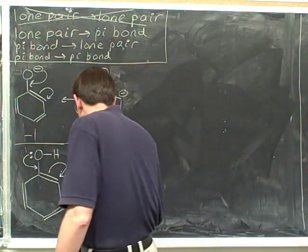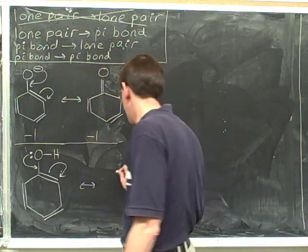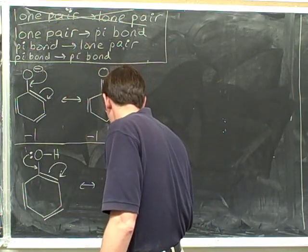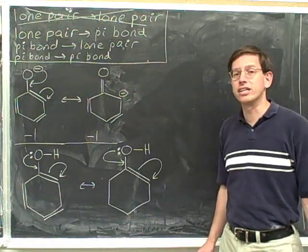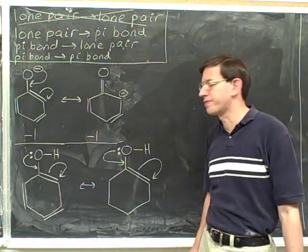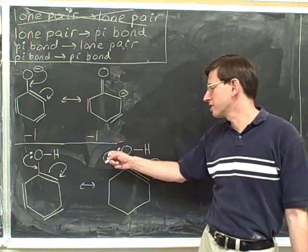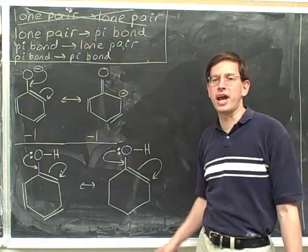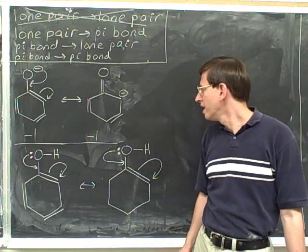We redraw using a double-headed arrow. We redraw the original structure, including the electron-pushing arrows. Now we look for the initial tail. Here's the initial tail. The initial tail is coming from a lone pair, so we know that we're going to have to remove that lone pair.